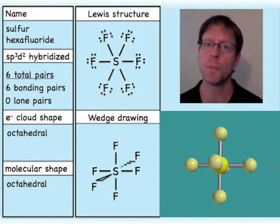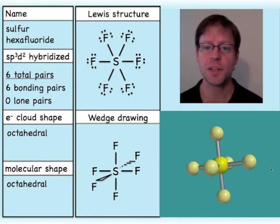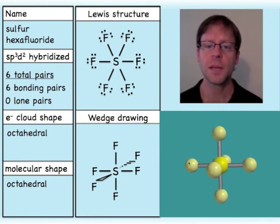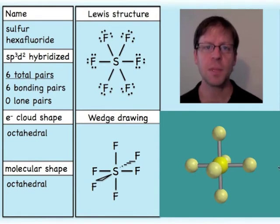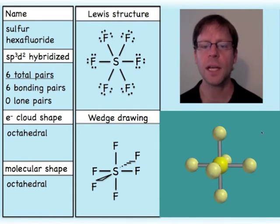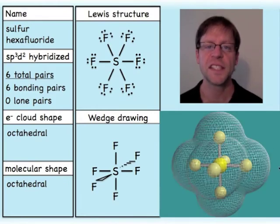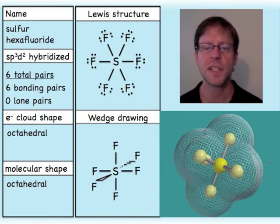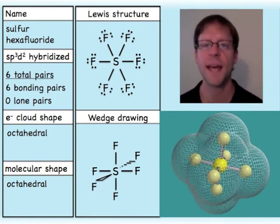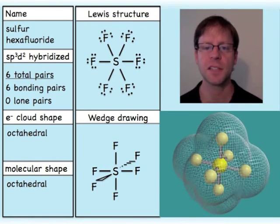Since all positions in the octahedral geometry are equivalent, when lone pairs start to come in it won't matter where the first one goes. The electron cloud mirrors the atoms in an octahedral shape. Drawing SF6 is straightforward: five atoms in the plane of the page, one solid wedge coming out, and one dashed wedge going back behind — both the atomic geometry and electron cloud are octahedral.